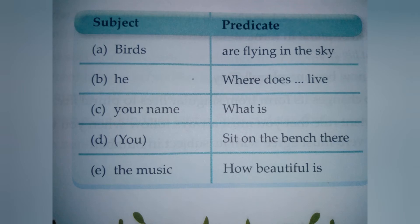Here on book page number 37 is a little chart that identifies the subject and predicate. The difference between the subject and predicate, and the identification of both, is very clear in this chart because all the sentences are written here, divided into two parts: subject and predicate. In the subject column we write: bird, he, your name, you, the music — that means all the nouns and pronouns are the subject.